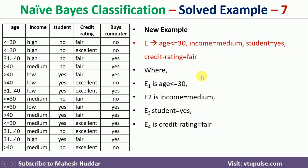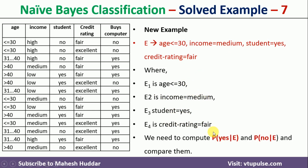Given these attribute values, we need to calculate two things: first, the probability of yes given E — the probability of buying the computer given the new example — and second, the probability of no given E. We then compare these two values, and the one with the maximum value is the final answer.